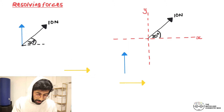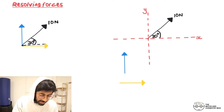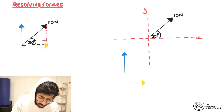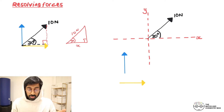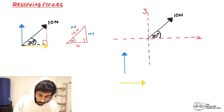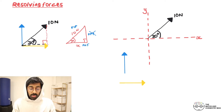What we should do is create a right-angle triangle using a red dotted line. We've got 10 newtons as the hypotenuse, 30 degrees as the angle, and a right angle in the corner. We're looking for the bottom side. Using SOH CAH TOA: we have the opposite, hypotenuse, and adjacent identified.